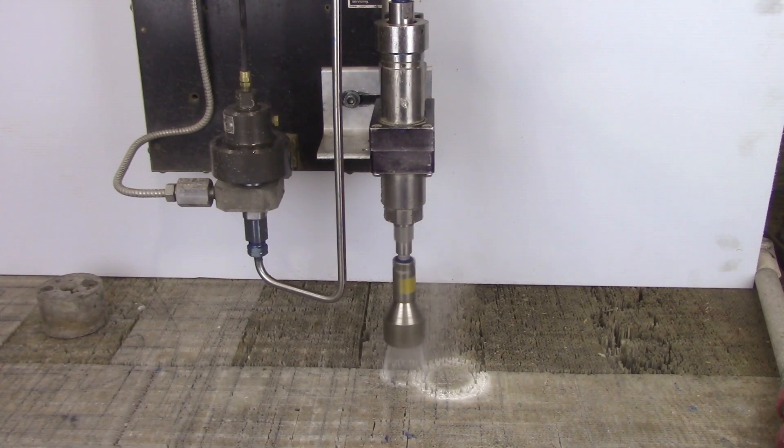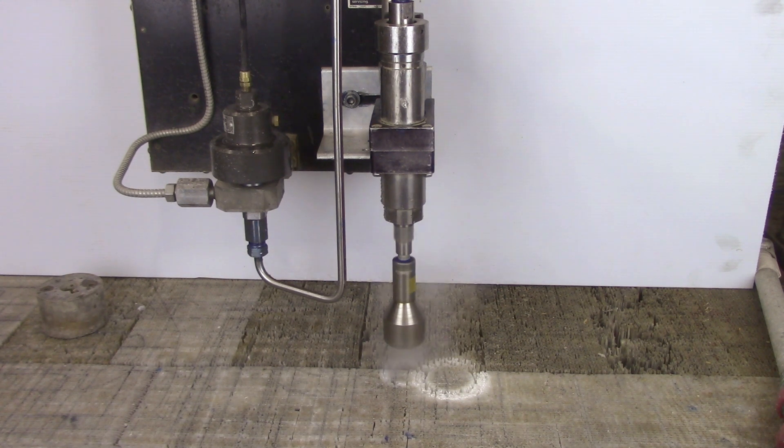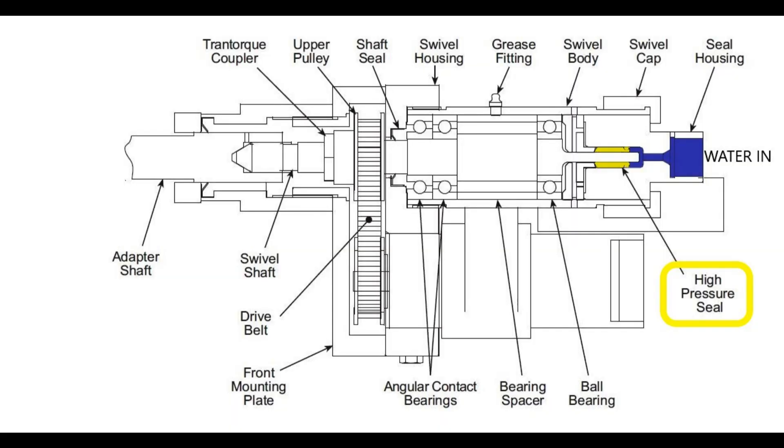A Jet Edge rotary swivel connects a fixed ultra high pressure water line to a rotary manifold. These swivels are ultra high pressure fixtures that can operate at speeds up to 1500 rpm and water pressure up to 55,000 psi. Water leakage from the swivel body indicates the swivel high pressure shaft seal is leaking and should be replaced.